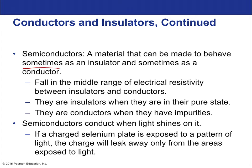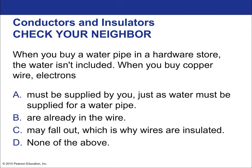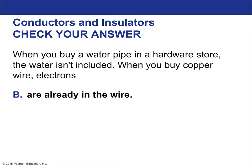Semiconductors conduct when light shines on them. For example, if a charged selenium plate is exposed to a pattern of light, the charge leaks away only from the areas exposed to light. When you buy copper wire, electrons are already included in the wire. Electrons in a wire actually only move at centimeters per second. What travels at the speed of light is the electrical field wave—the domino effect. The electrons move quite slowly.